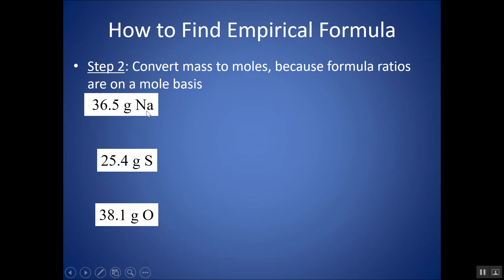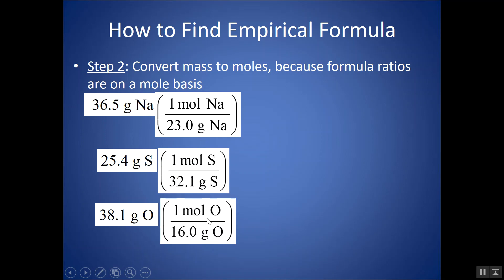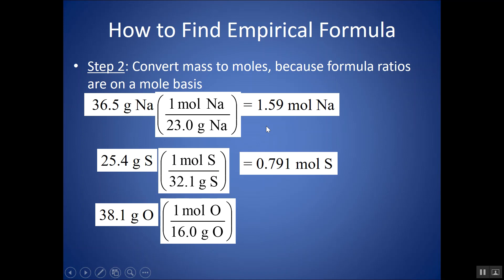So 36.5 grams of sodium — I want a conversion factor with grams on the bottom and moles on top. Sodium has an atomic mass of 23, so one mole of sodium weighs 23 grams. For sulfur, the atomic mass is 32.1, and the atomic mass of oxygen is 16. Carrying out these calculations, here are the number of moles I get. Make sure you're keeping enough significant figures — I started with three significant figures, so I round my answer to three. Most importantly, don't round and cut off too many numbers, because then when you get to subscripts you won't get nice whole numbers.